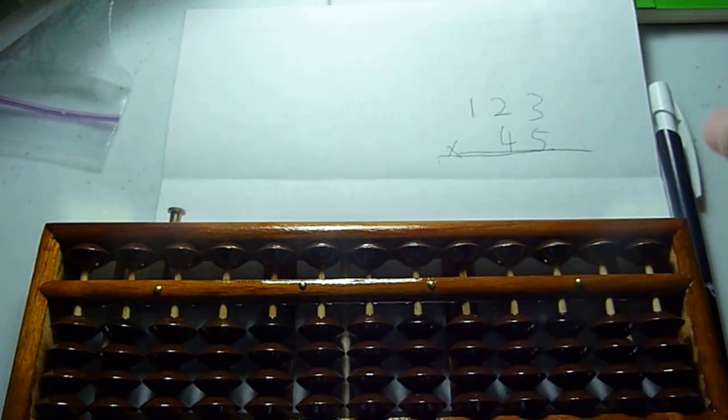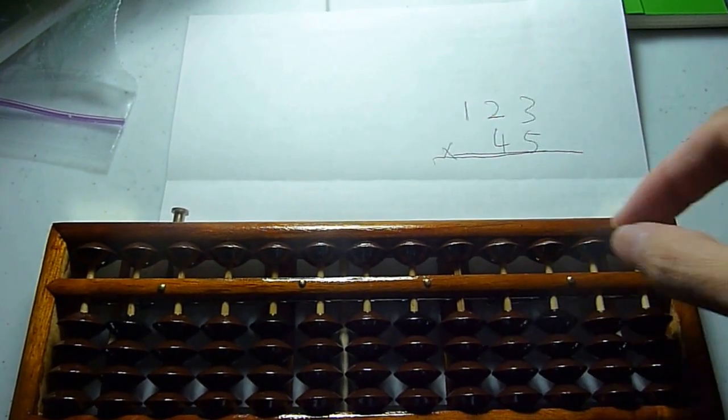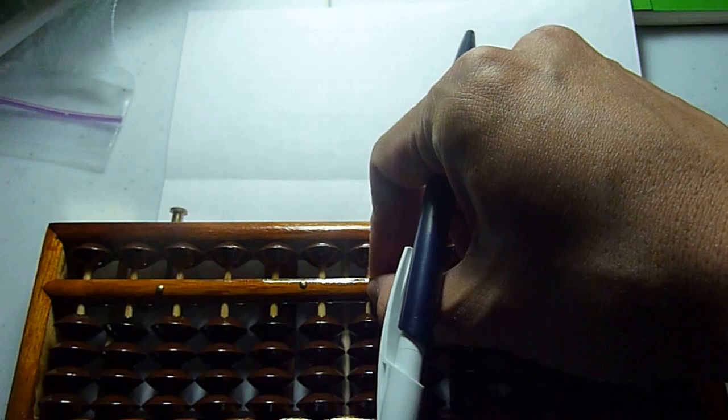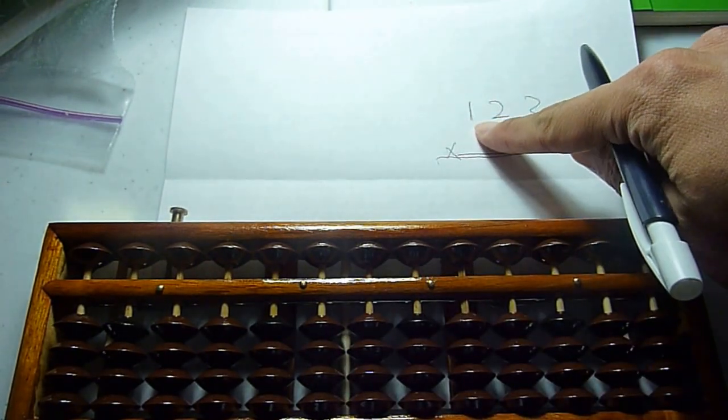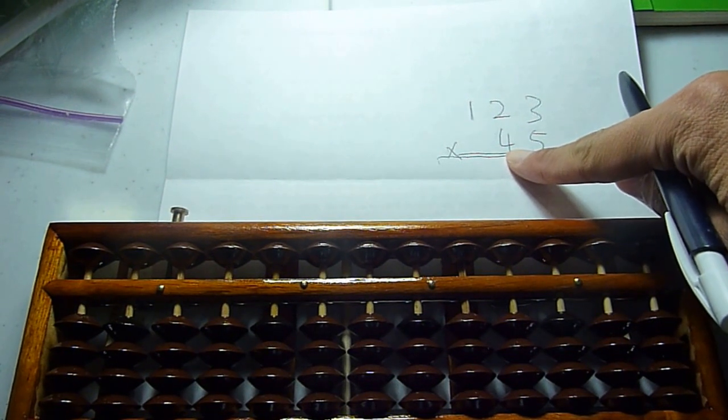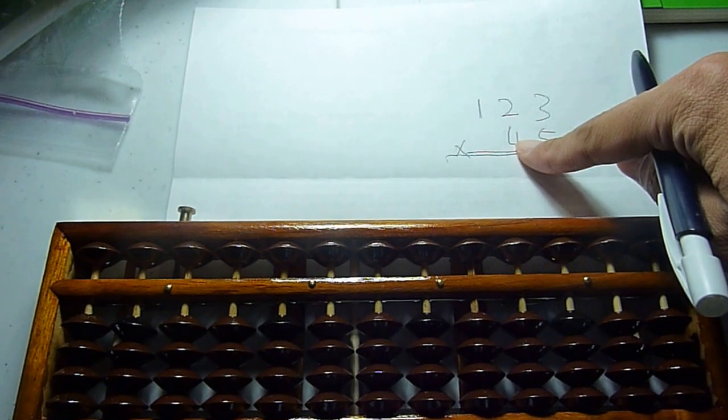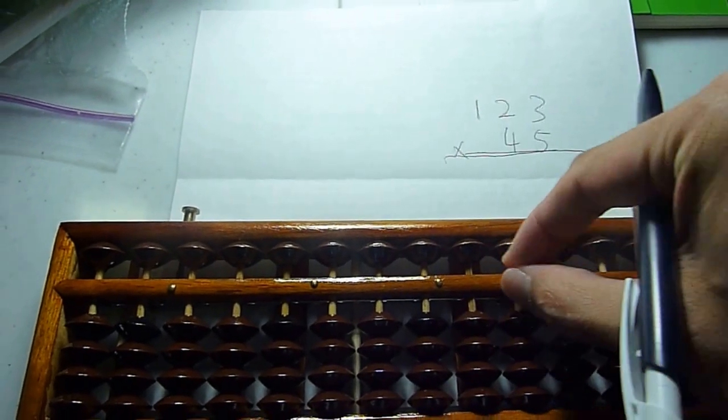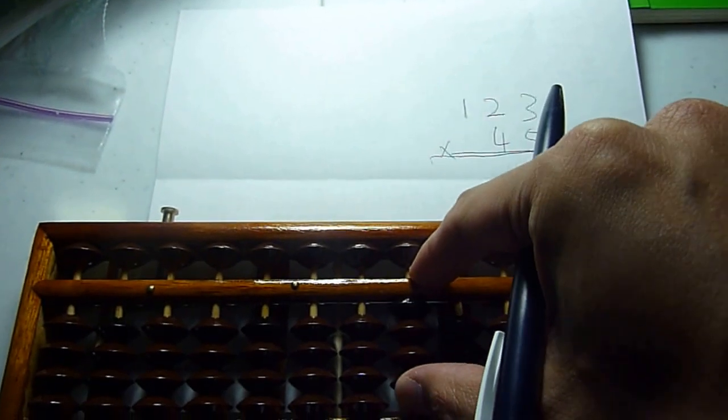Okay. So the way you start: at the fifth digit, starting with the leftmost number, multiply by the leftmost number on the bottom. One multiplied by four equals zero, four. So at the fifth digit position, zero, four.